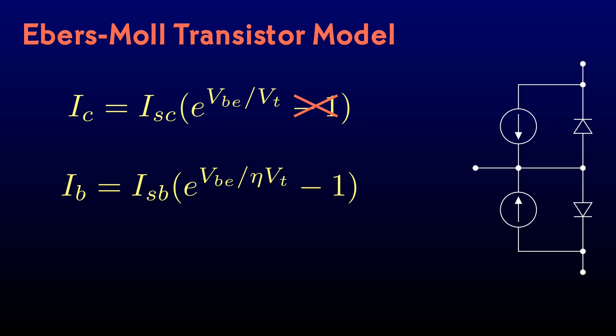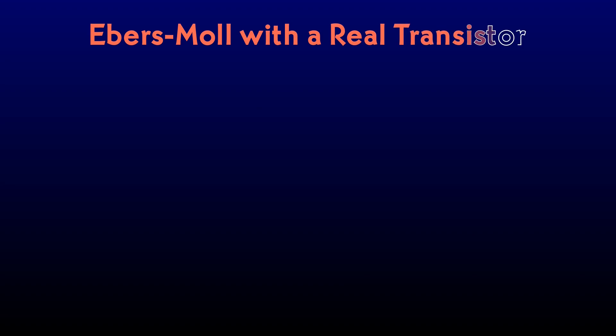We've already verified that the base-emitter junction follows the diode equation. Now let's take a quick look and make sure that the collector current follows the Ebers-Moll model. We're actually measuring the emitter current, but with the transistor's beta over 200, that's effectively the same thing. We'll continue to abuse the same 2N4401 transistor that we've been working with, put it on our test rig, and subject it to various collector voltages. We'll tabulate the best fit for the saturation current. The last test will make the collector voltage as small as possible by tying the base and collector together. So, here we go.